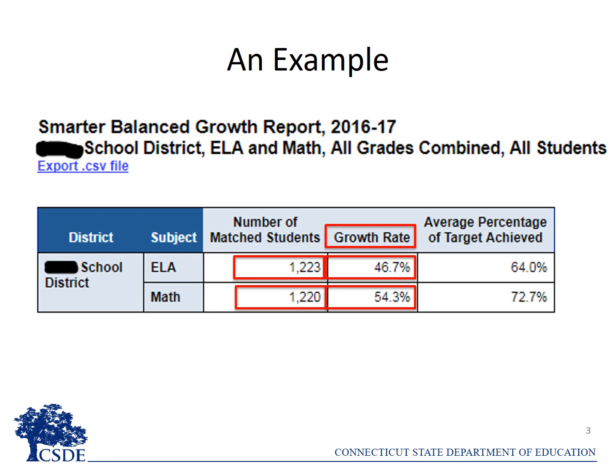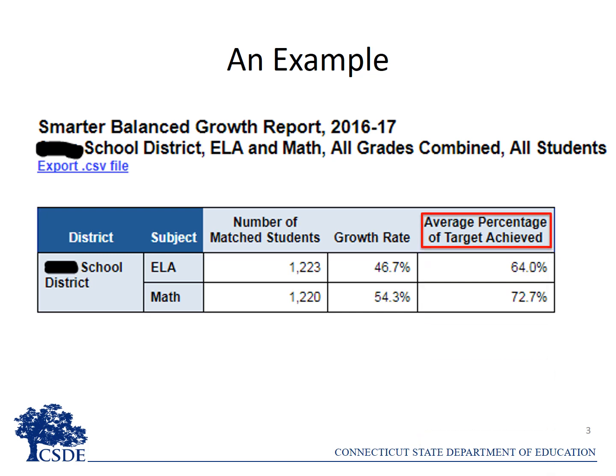If that's the growth rate, then what is the average percentage of target achieved? To be clear, it is not a percentage of students — it's actually a percentage of the target. All students achieve a certain percentage of their respective targets: some achieve 100 percent of their target, some 60 percent, some 50 percent, some zero, and so on. When you average those percentages, you get the average percentage of target achieved.